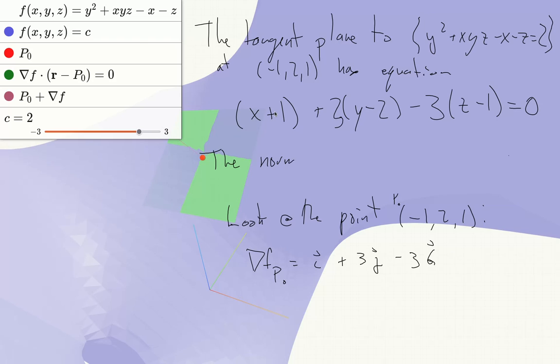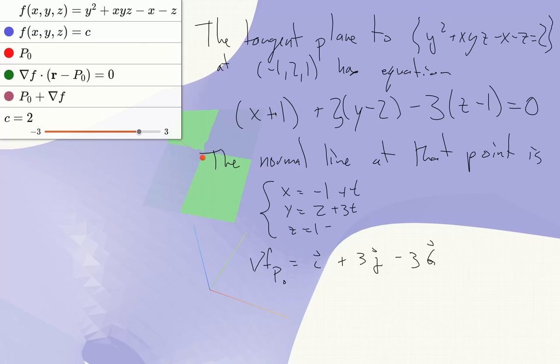And the normal line at the same point is defined by x equals negative 1 plus t, y equals 2 plus 3t, and z equals 1 minus 3t.